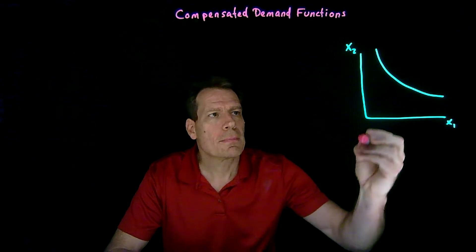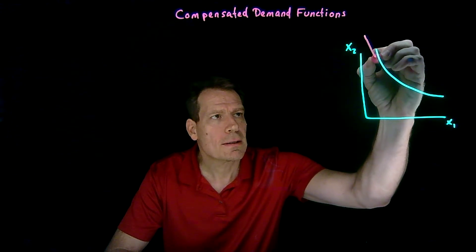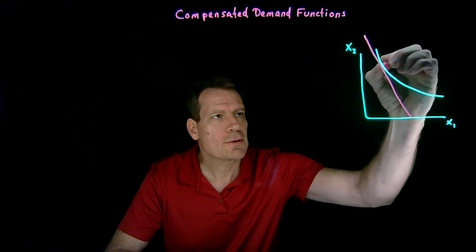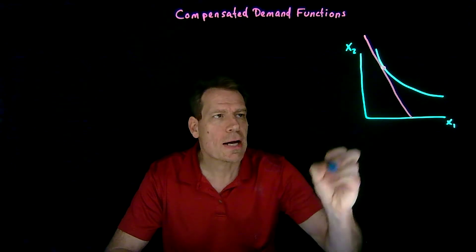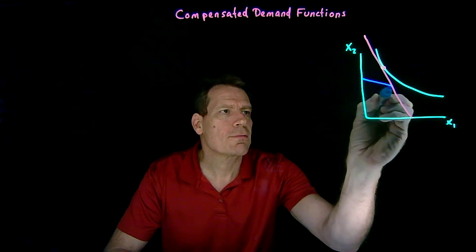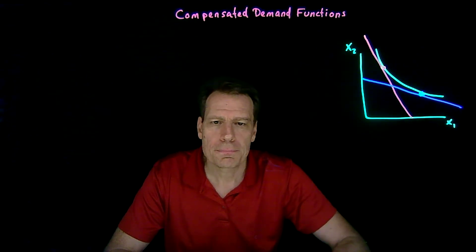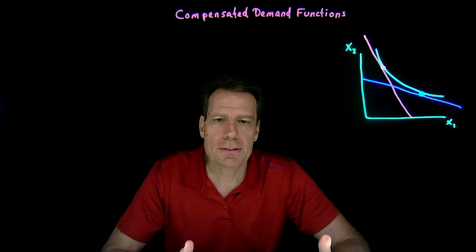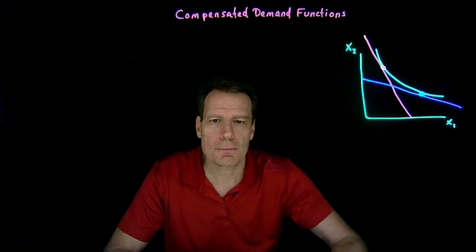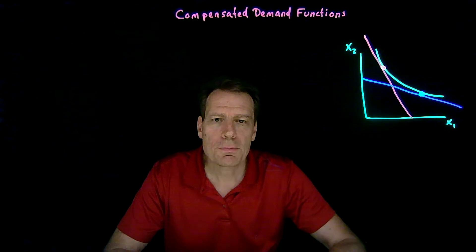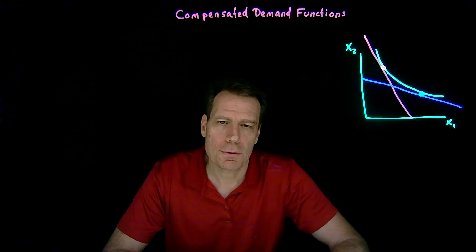So if the prices form a very steep budget line, we'll give you enough money to get to a tangency like this. Or if they form a more shallow budget line, we'll give you enough money to reach a point like this. Regardless of what the prices are, we'll ensure that you end up on the same indifference curve, and we'll find the least expensive way to get you to that indifference curve.